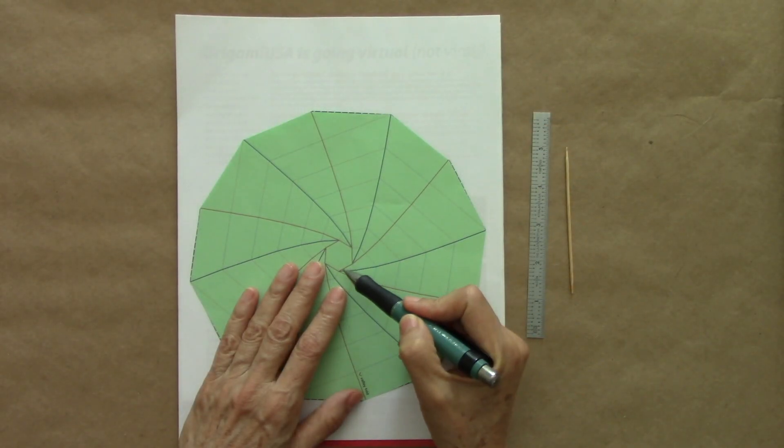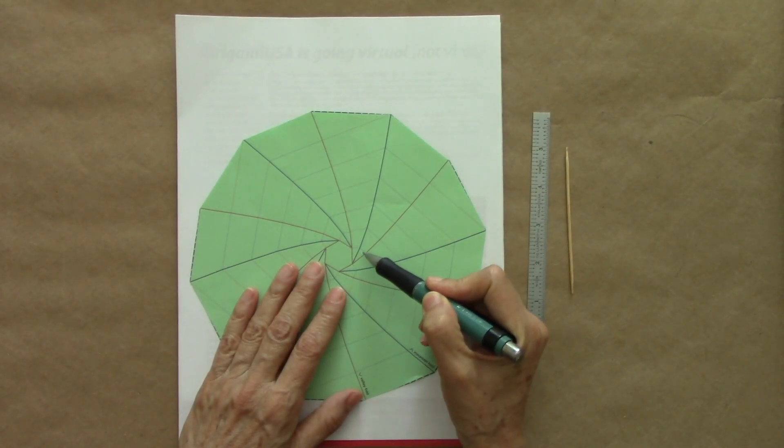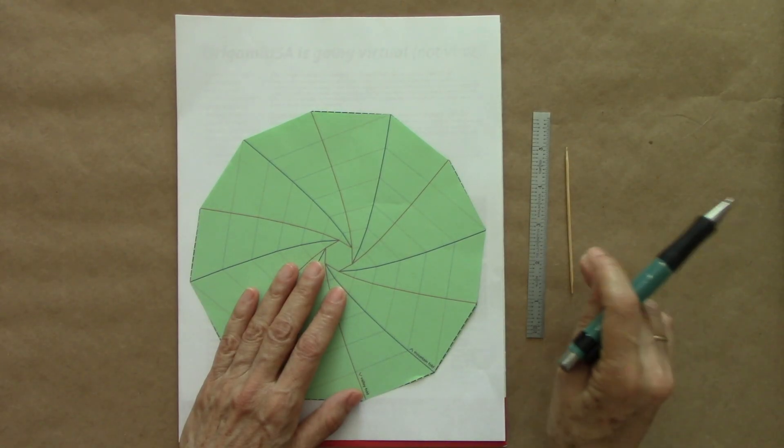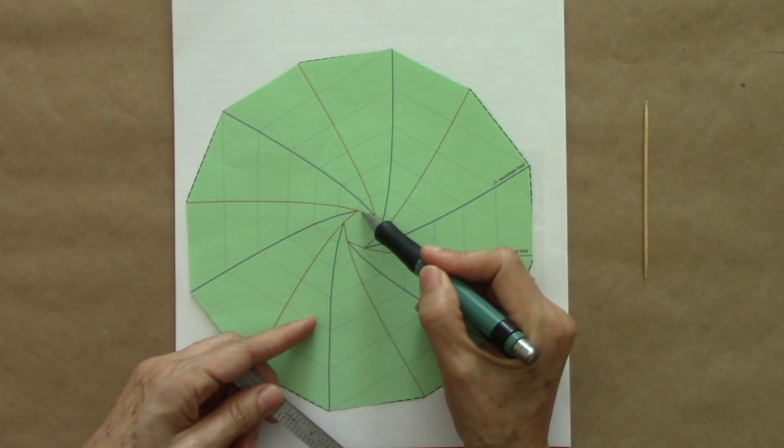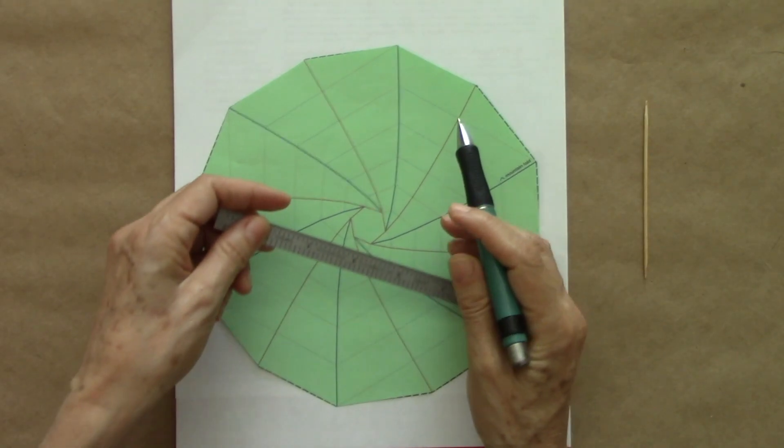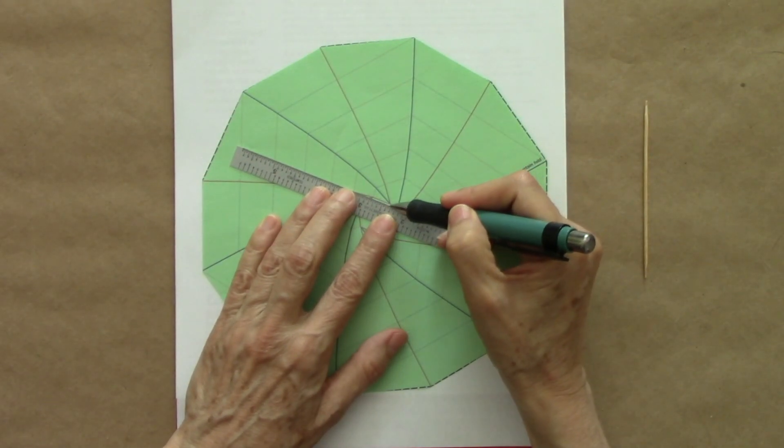First, we are going to score the valley folds on this side, so the red lines only. I begin by scoring this central hexagon, just to visualize it.